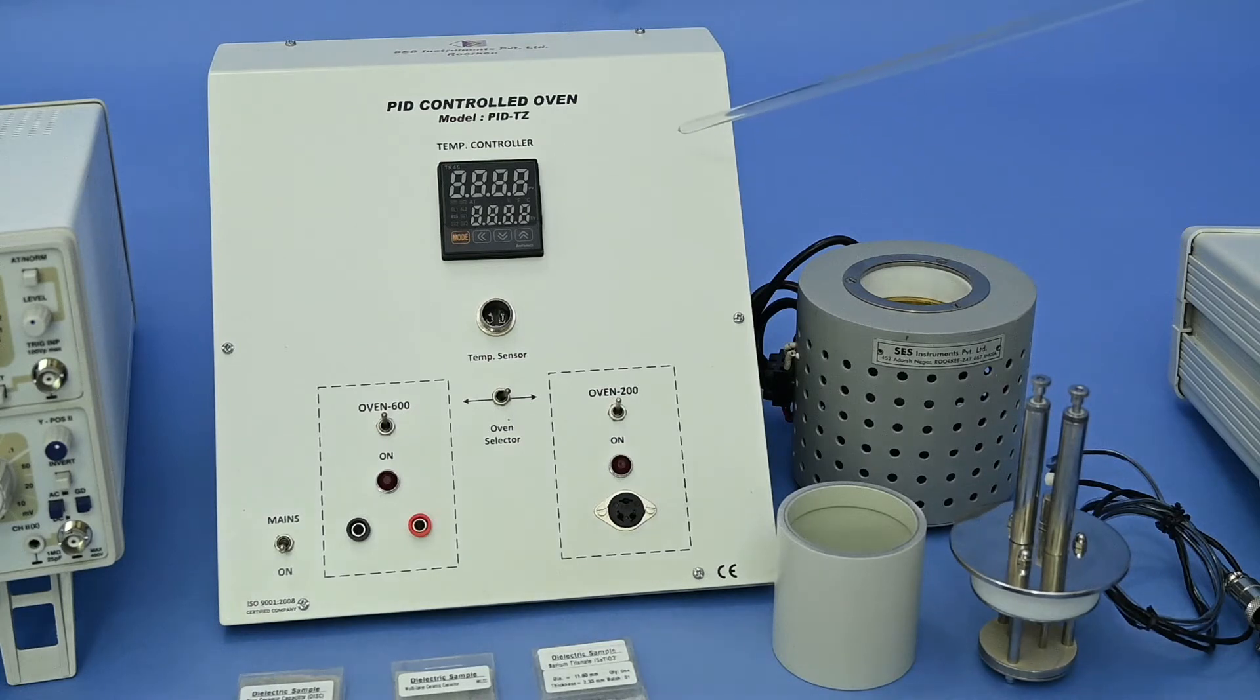Oven with PID controller unit. Temperature range can be set from ambient to 199.9 degrees maximum with the help of PID controller. This is an optional accessory required to perform the experiment on study of temperature dependence of dielectric constant at different frequencies. However, otherwise this experiment is complete in itself.